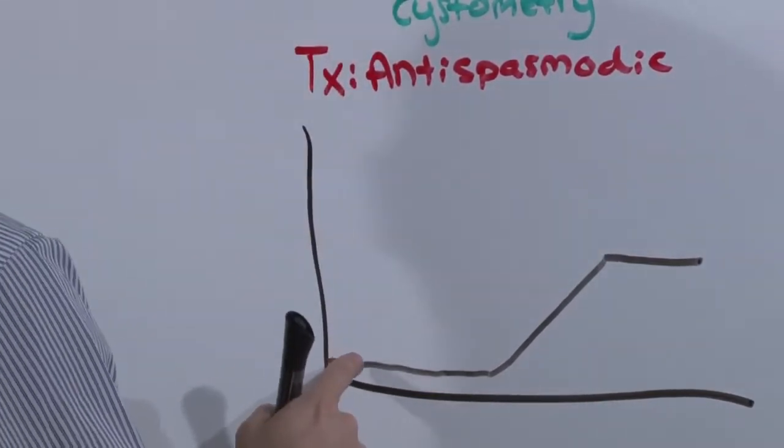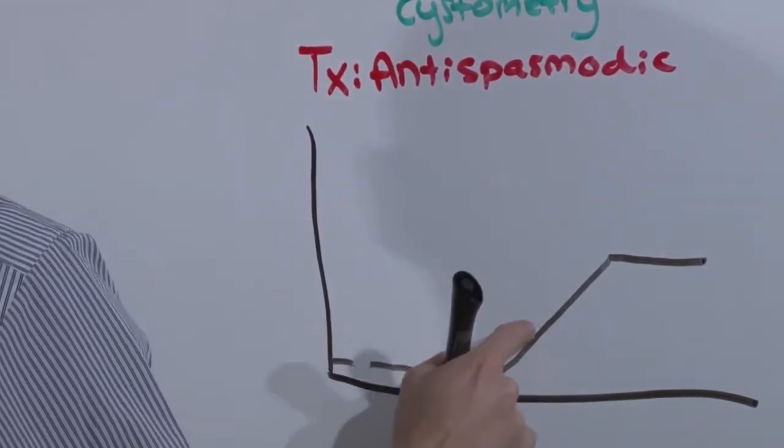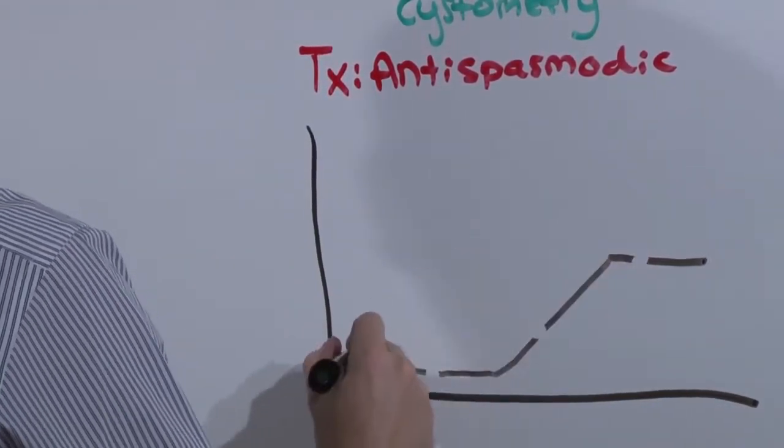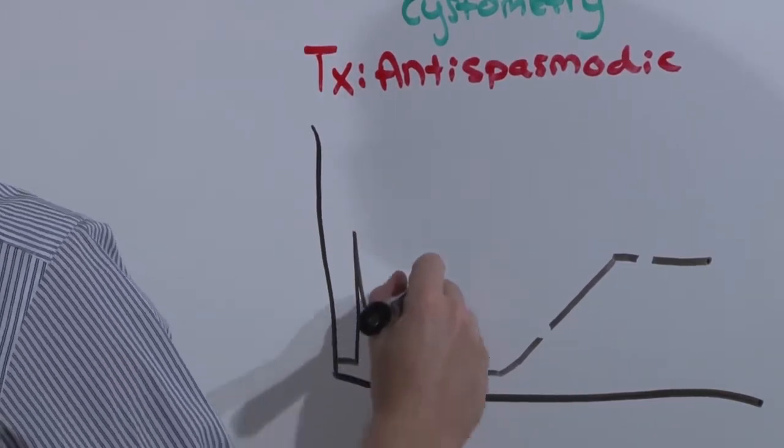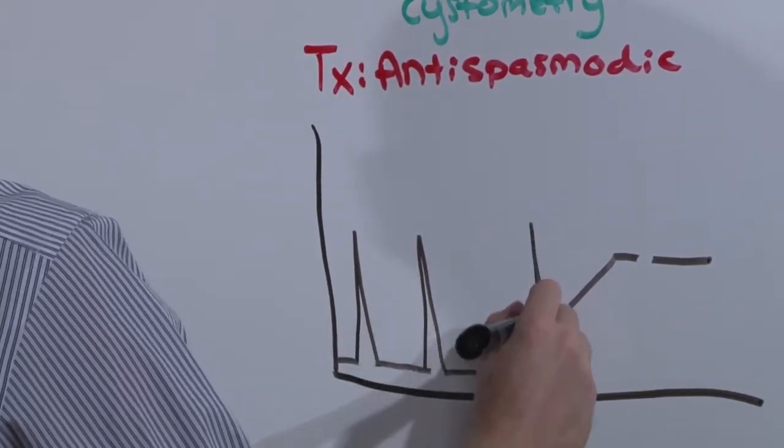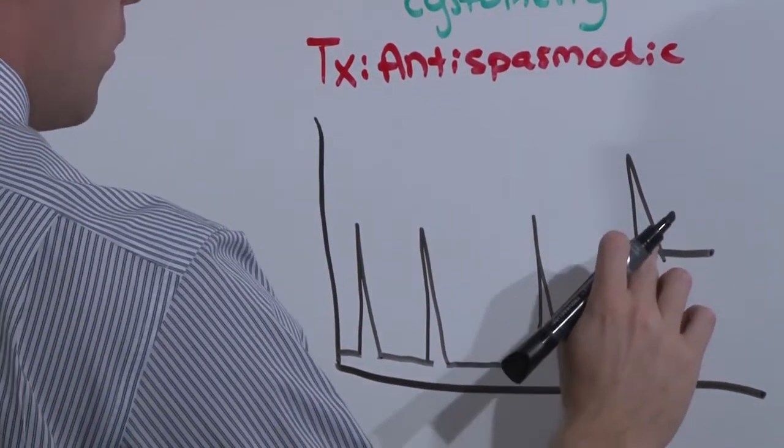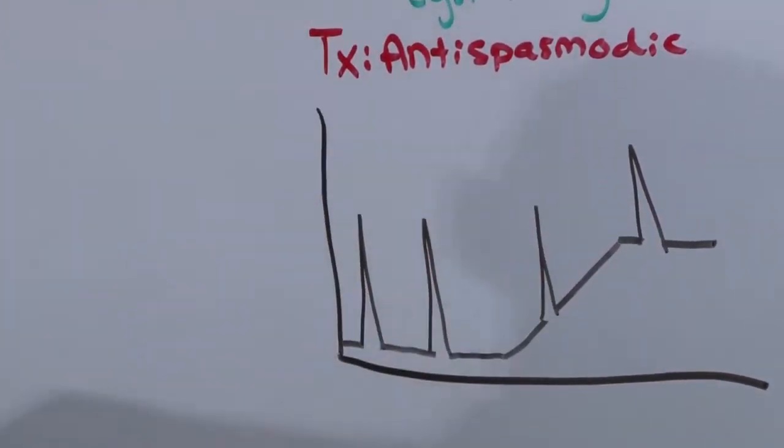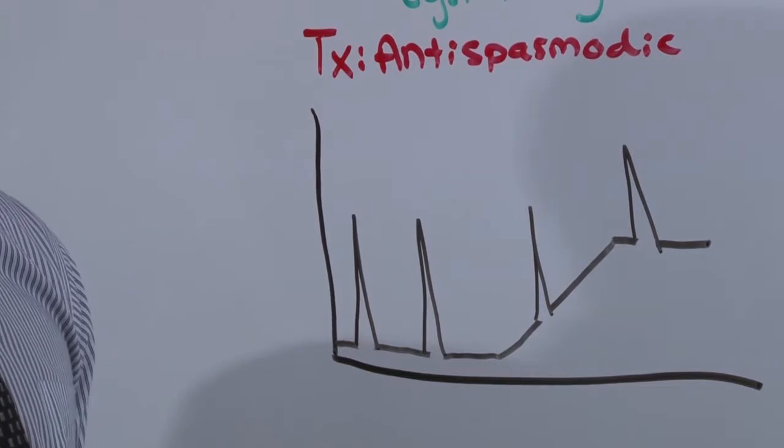What hypertonic or motor urge looks like is random contractions of the detrusor muscle that occur at all volumes and totally randomly. And with each contraction, there will be loss of urine.